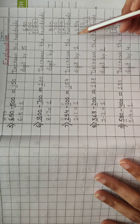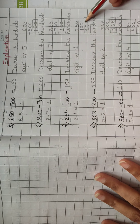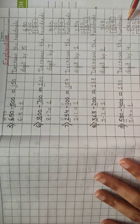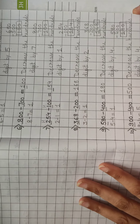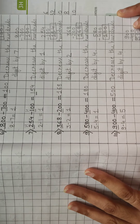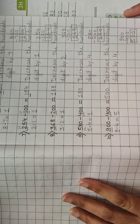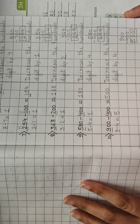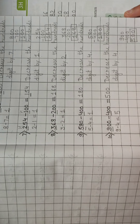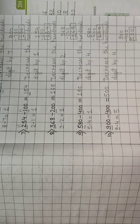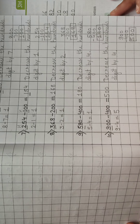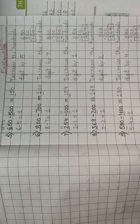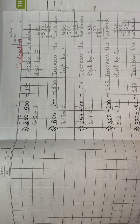Decrease the hundreds digit by 1. I have solved all the sums here for you so that you can easily do it. There are 10 questions; you will do them in your maths notebook in neat, beautiful handwriting and carefully. Don't make mistakes.